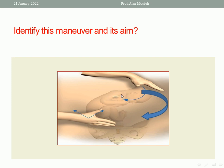Another question: identify this maneuver and its aim. In this picture, this is a breech presentation, and the maneuver shown is external cephalic version — trying to rotate the head downward while pushing the buttocks upward, to change the presentation from breech to cephalic. The aim of external cephalic version is to change the presentation from breech to cephalic, to give the patient a chance for vaginal delivery, and to minimize the need for caesarean section.